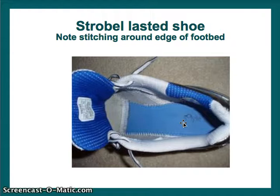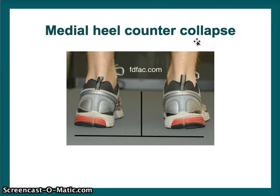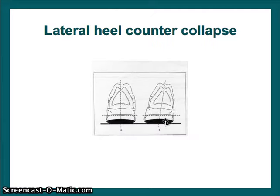There's a combination last, which is very similar to the strobel-lasted shoe. Shoe wear can sometimes be used to indicate foot deformities. For example, a medial heel counter collapse is usually an indication that someone is an excessive pronator — we can see the medial heel beginning to collapse in this picture. For somebody with a lateral heel counter that moves laterally, it's usually indicative of a more rigid, supinated foot that stays more laterally displaced.